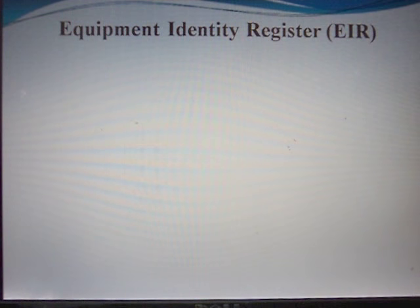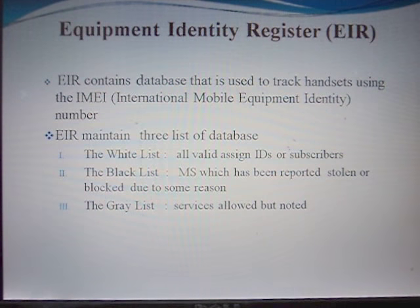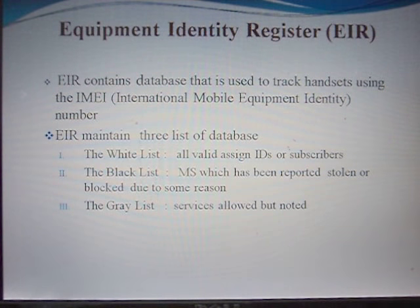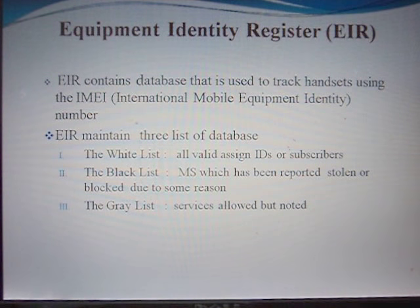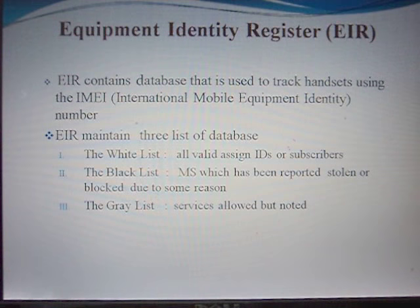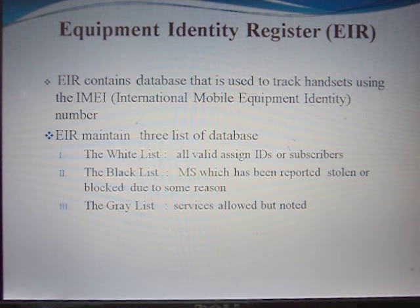The Equipment Identity Register (EIR) contains a database used to track handsets using the IMEI, which stands for International Mobile Equipment Identity Number. The IMEI is assigned at the time of manufacturing the device by the manufacturer itself. EIR maintains three lists: the White list, which belongs to valid or assigned IDs or subscribers; the Black list, which contains mobile sets that have been reported stolen or blocked for some reason; and the Gray list, where service is allowed but noted.